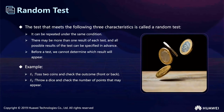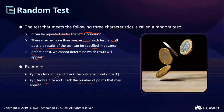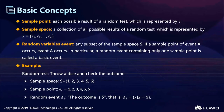Let's introduce the random test. A random test may be very familiar to us. It can be repeated under the same conditions and there may be more than one result for each test. All possible results of the test can be specified in advance, but before a test we can't determine which result will appear. For example, tossing two coins and checking the output, or throwing a dice and checking the number — these are both random tests.